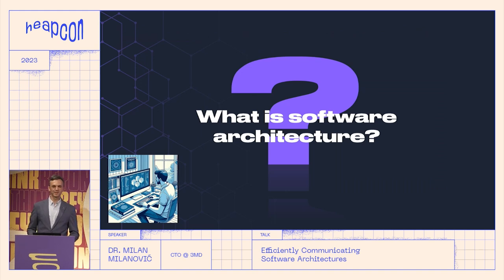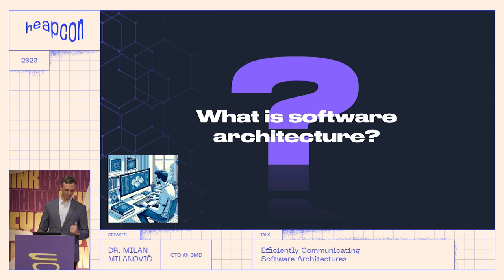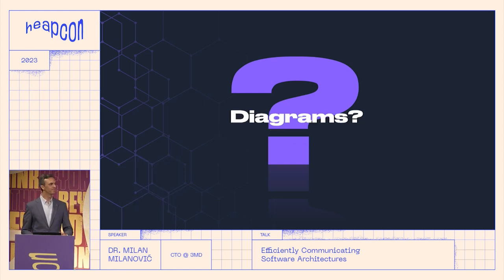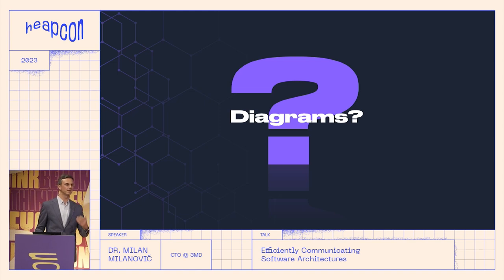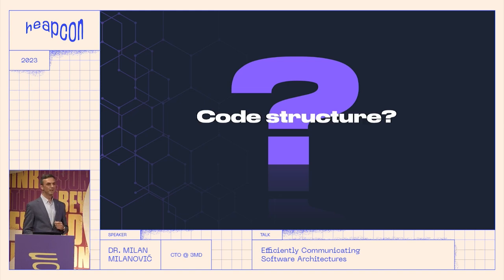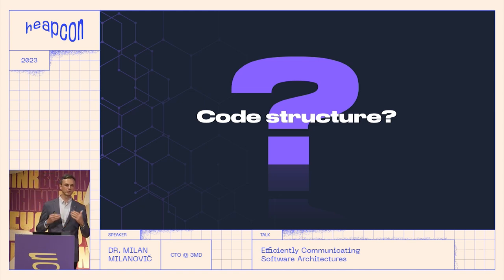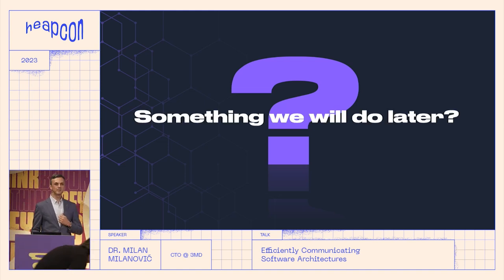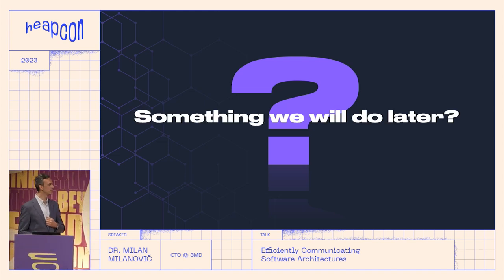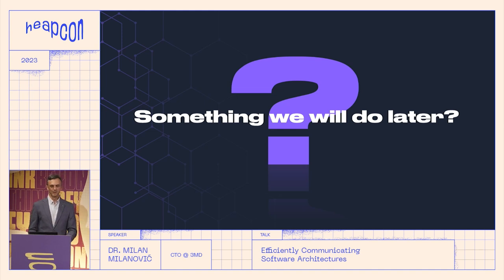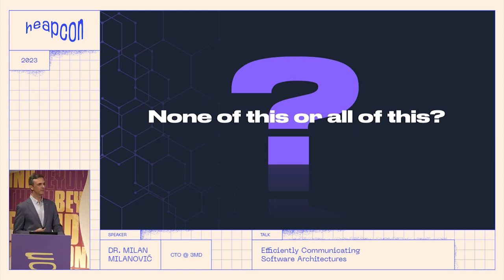So let's talk about our today's subject: software architecture. The question is, what is software architecture? Is it diagrams — when we show some architectural diagrams, can we say this is the architecture of our solution? Or maybe it is how we structure our code, which architectural patterns we use, which architectural styles? Or maybe something we will do later, which we can see a lot with MVPs — we start doing, and then later we define our architecture. Or maybe none of this or all of this.